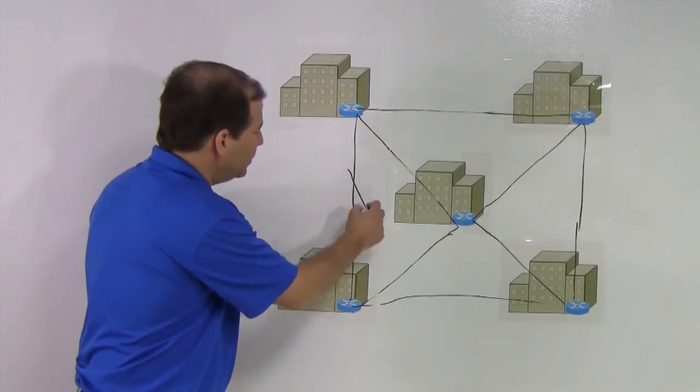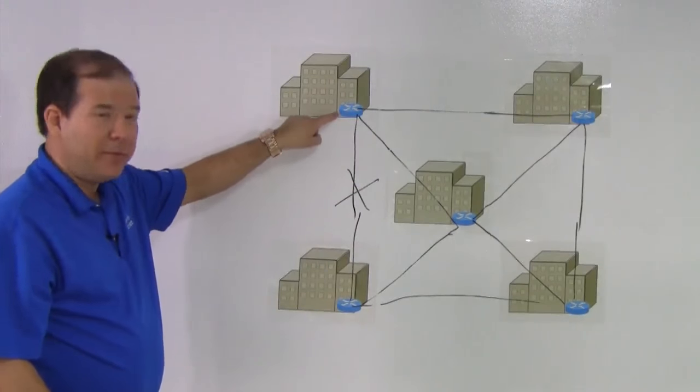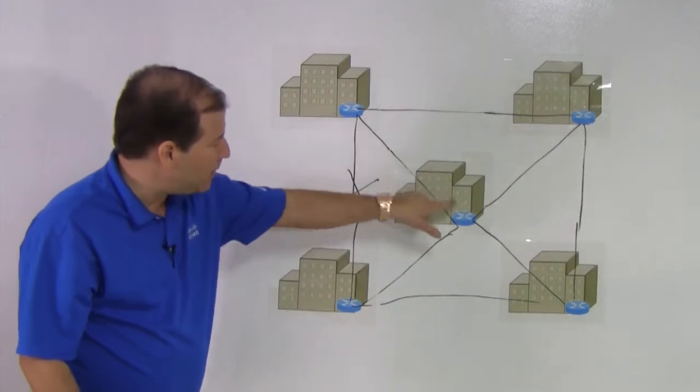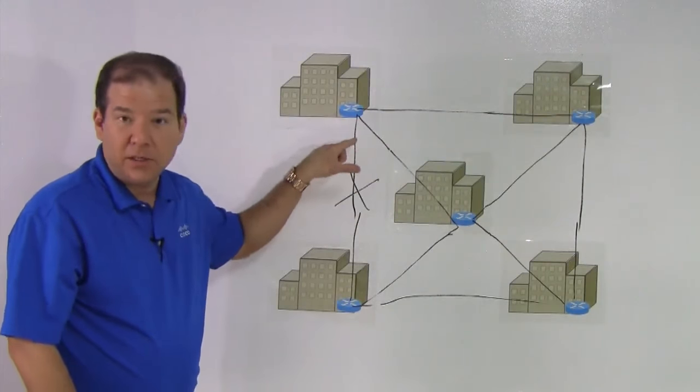That way, if one link goes down, let's say we lose this link, we could still get from this building to the other building simply by going through that centralized site.